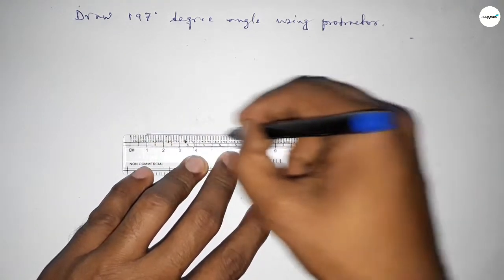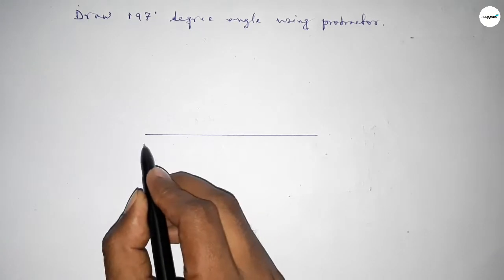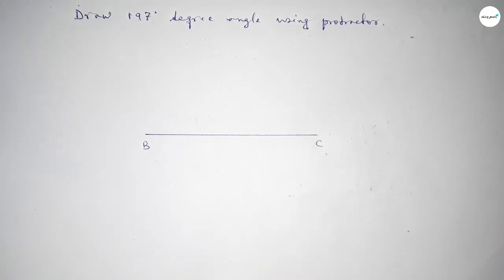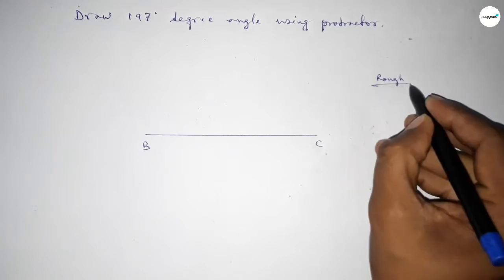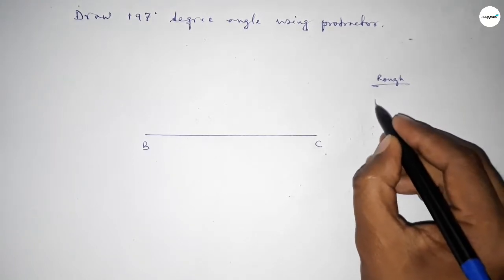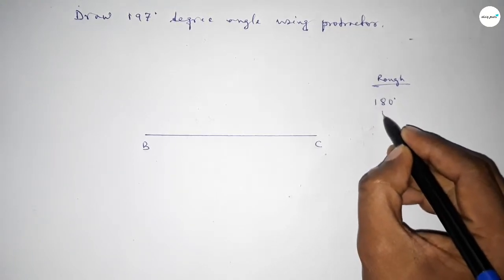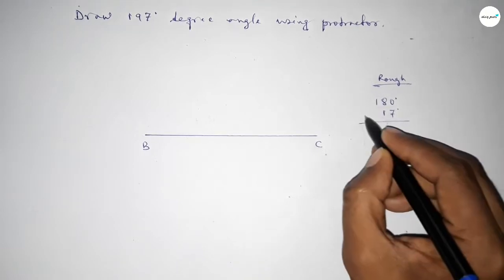Now roughly discussing some calculation here. So if we add 17 degree angle with 180 degree, then we can get 197 degree. So first we have to draw 180 degree angle on the point B.